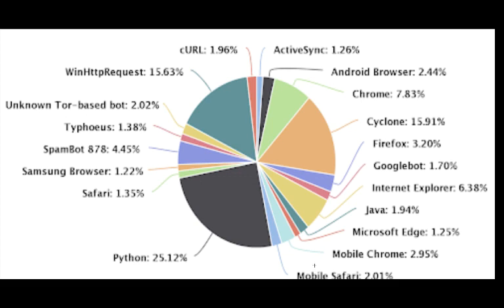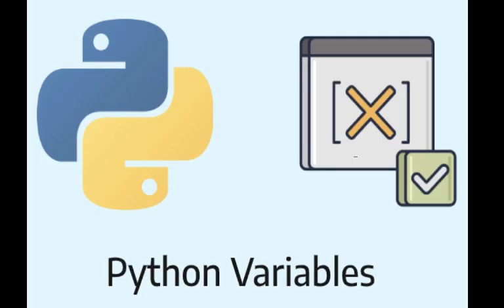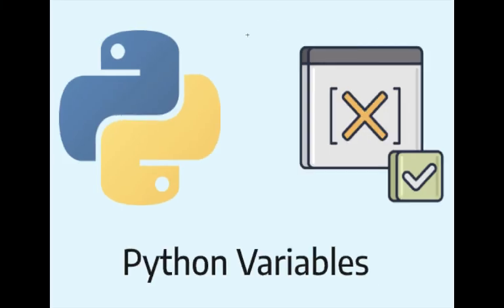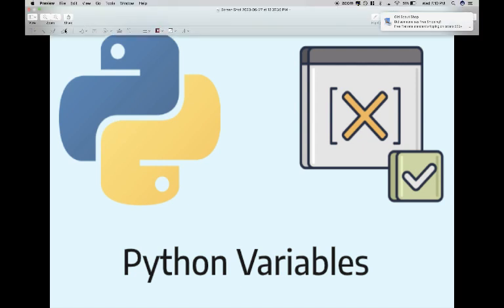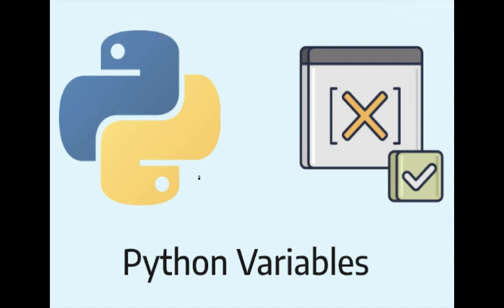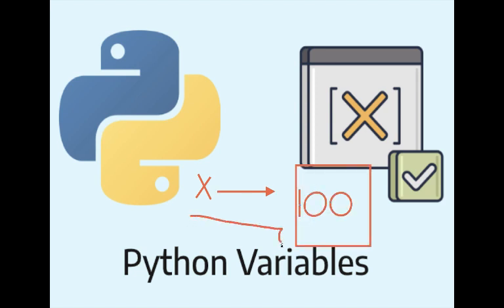Now we'll answer the second question: what are Python variables? In last class's homework, there were three symbols — an X, an arrow, and a 100 block. The X is the name of the variable, the arrow is the equals sign we use in Python, and the 100 block is the value of X.